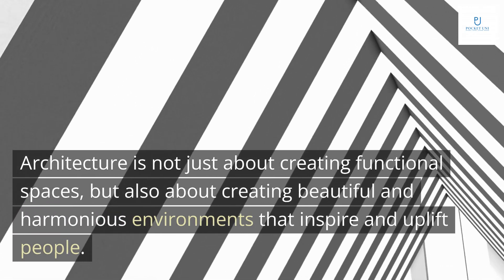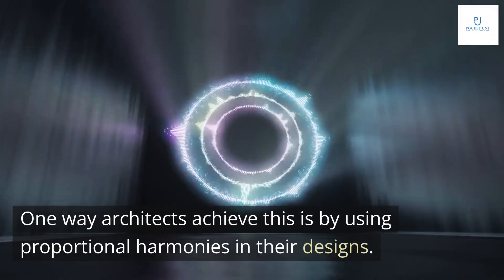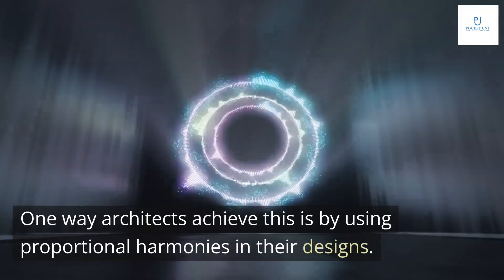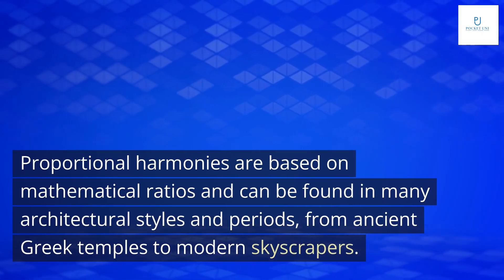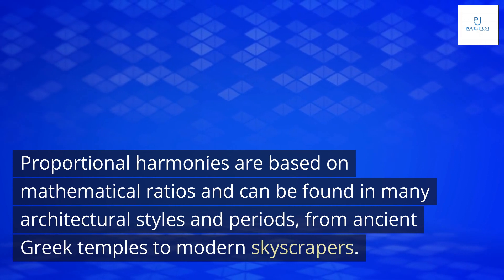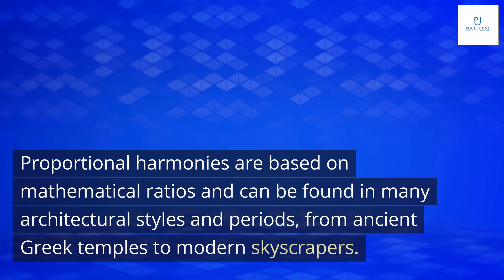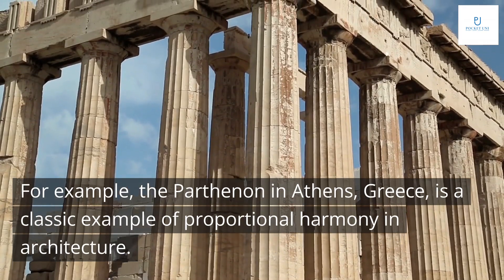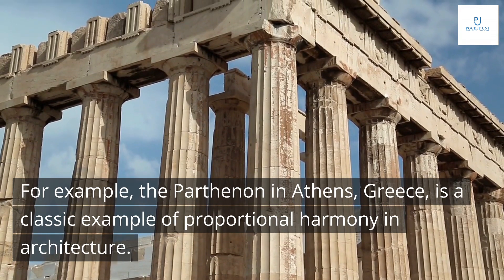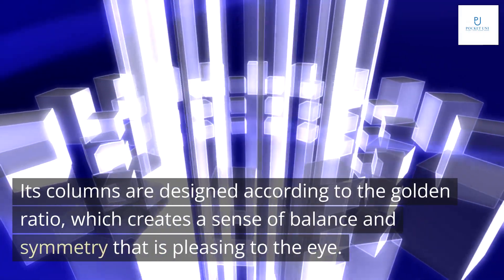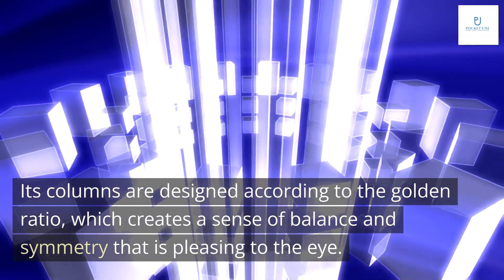Architecture is not just about creating functional spaces, but also about creating beautiful and harmonious environments that inspire and uplift people. One way architects achieve this is by using proportional harmonies in their designs. These harmonies are based on mathematical ratios and can be found in many architectural styles and periods, from ancient Greek temples to modern skyscrapers. For example, the Parthenon in Athens, Greece, is a classic example of proportional harmony in architecture — its columns are designed according to the golden ratio, which creates a sense of balance and symmetry that is pleasing to the eye.